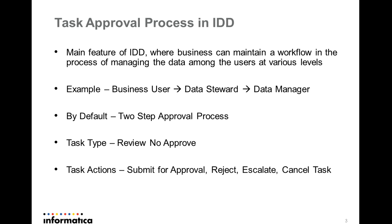The default task type that demonstrates the two-step approval process is 'Review No Approve'. The actions available for Review No Approve are: submit for submitting the task for approval, rejecting the task, escalating the task to the next level, or cancelling the task.